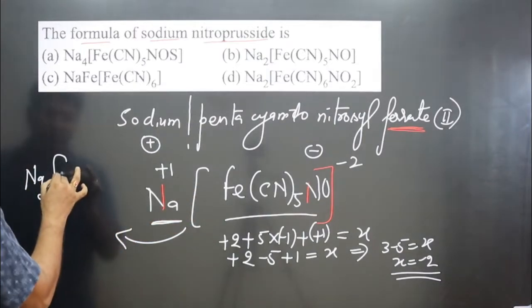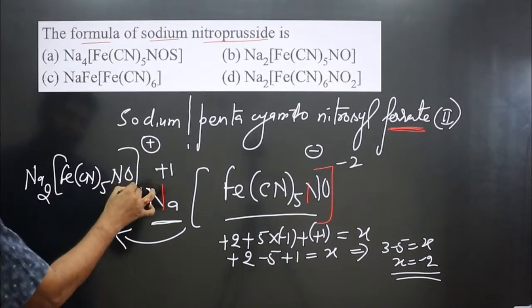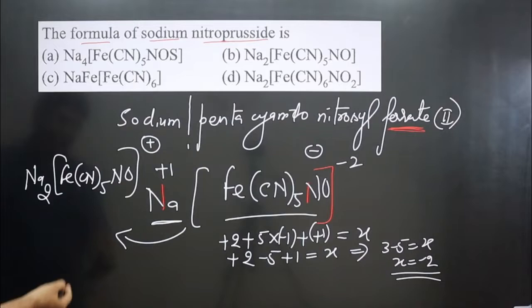In bracket, this is iron, CN, whole 5 is there. This is NO and this is 1. So 1 we do not need to mention.